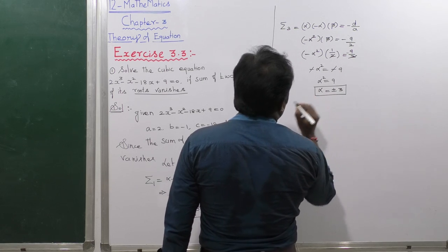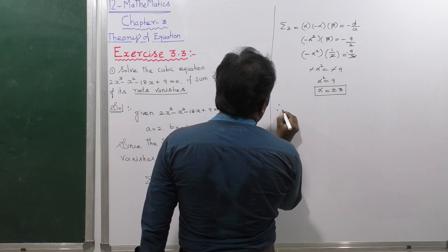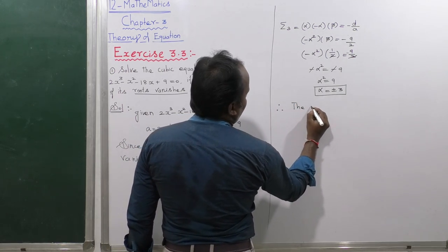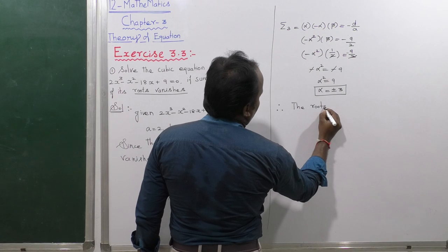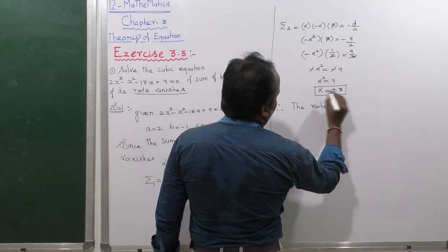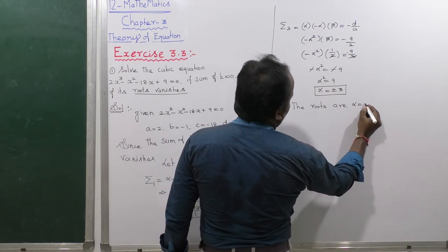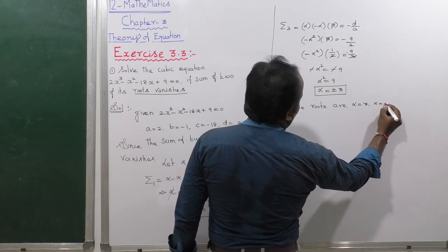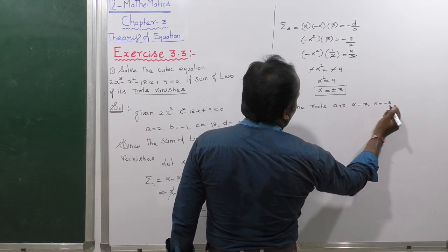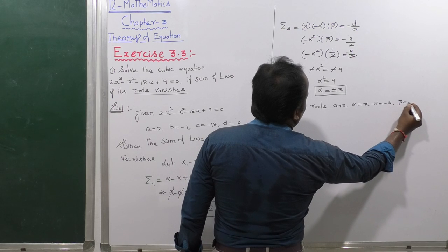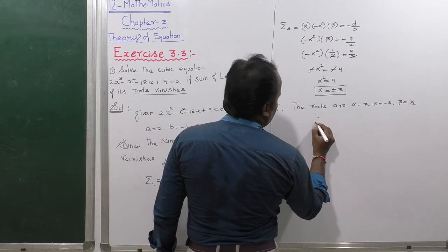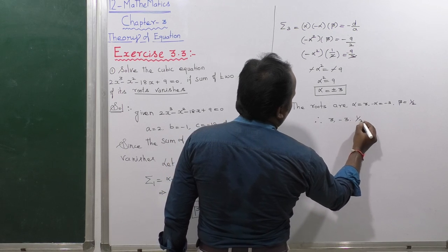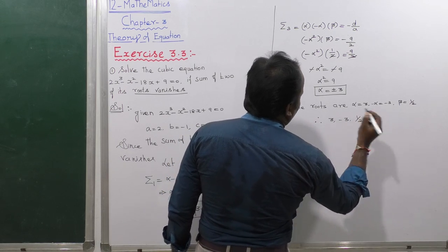Therefore the roots are: alpha = 3, minus alpha = -3, and beta = 1/2. Hence the three roots are 3, -3, and 1/2.